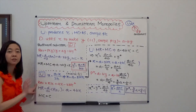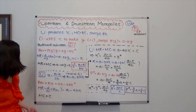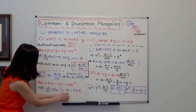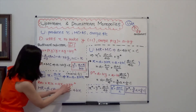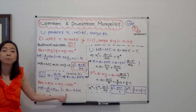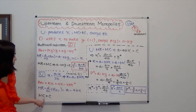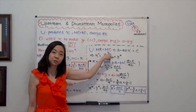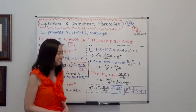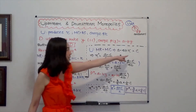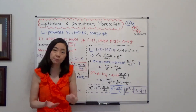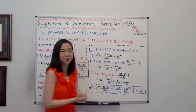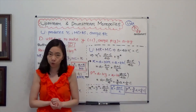Now I have the revenue function for Company U. I can find the marginal revenue for Company U. Marginal revenue is the derivative of revenue with respect to quantity X, and that will be equal to A minus 4BX. What is the marginal cost? It is given in the question — marginal cost is C. So I'm going to set marginal revenue equal to marginal cost for Company U to maximize my profit. That means A minus 4BX is equal to C. And therefore I can find my optimal quantity X star. Solving for this equation, X star is equal to (A minus C) over 4B.